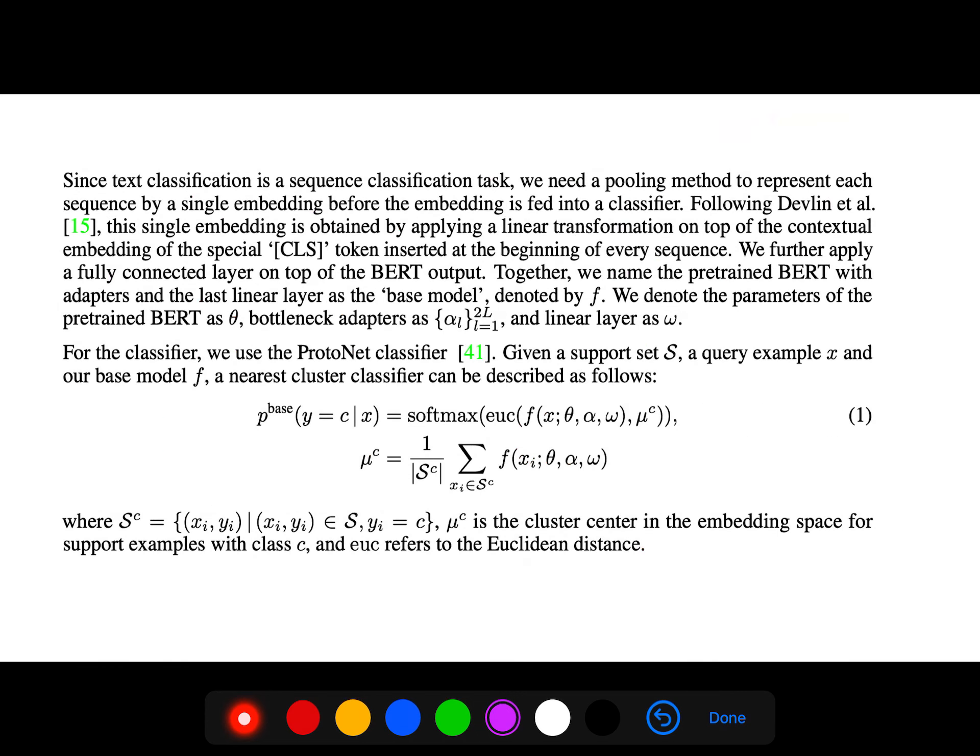For the ProtoNet classifier, given a support set, a query set, and a base model, a nearest cluster classifier can be described. SC here is just all labels with class C, and mu sub C is the cluster center in the embedding space for support examples with class C.